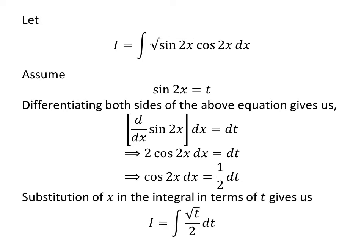Substituting sine of 2x with t and cosine of 2x times dx with one-half dt in the integral i gives us i equal to the integral of the square root of t over 2 with respect to t.